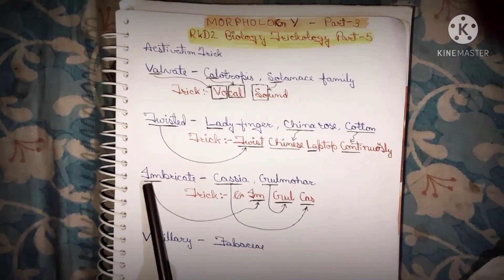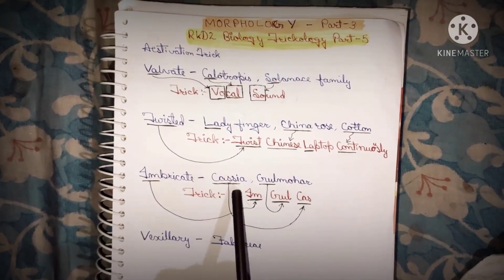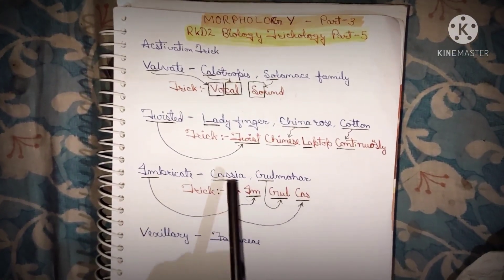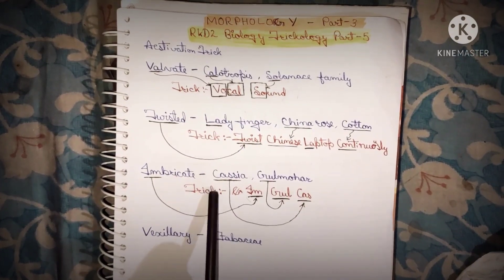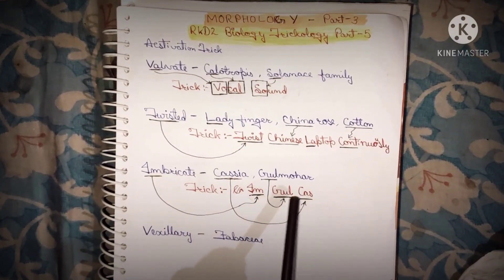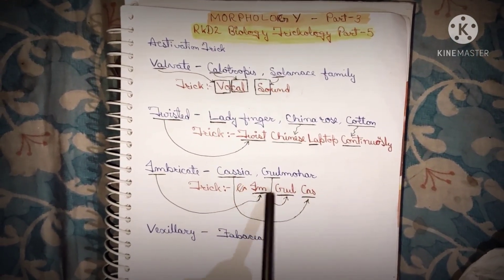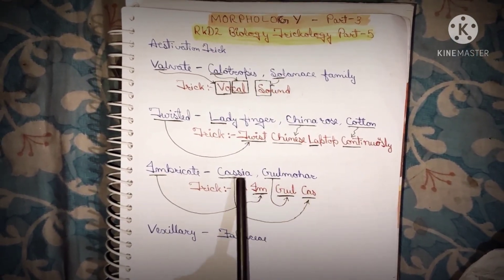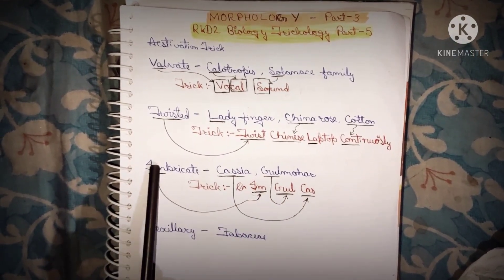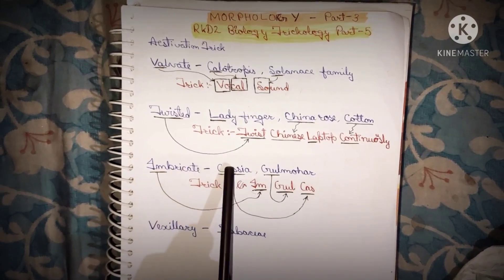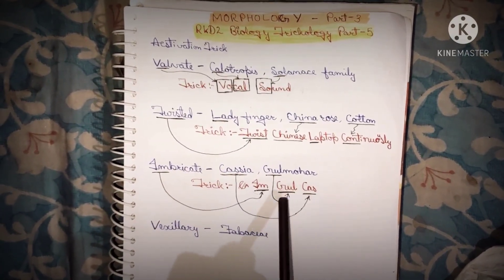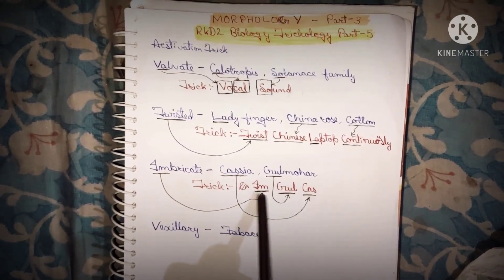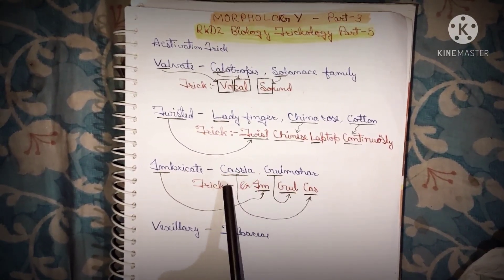Imbricate estivation examples are Cassia and Gulmohar. The trick is 'I am Gulkass' — I am indicates Imbricate, Cass indicates Cassia, and Gul indicates Gulmohar.